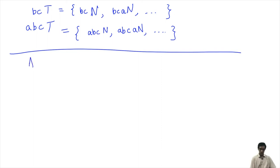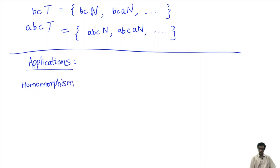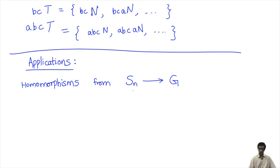Now let us move on to the application of the generators and relations procedure. The key use is constructing homomorphisms. If you know the generators and relations for Sn, you can construct homomorphisms from Sn to any other group G.